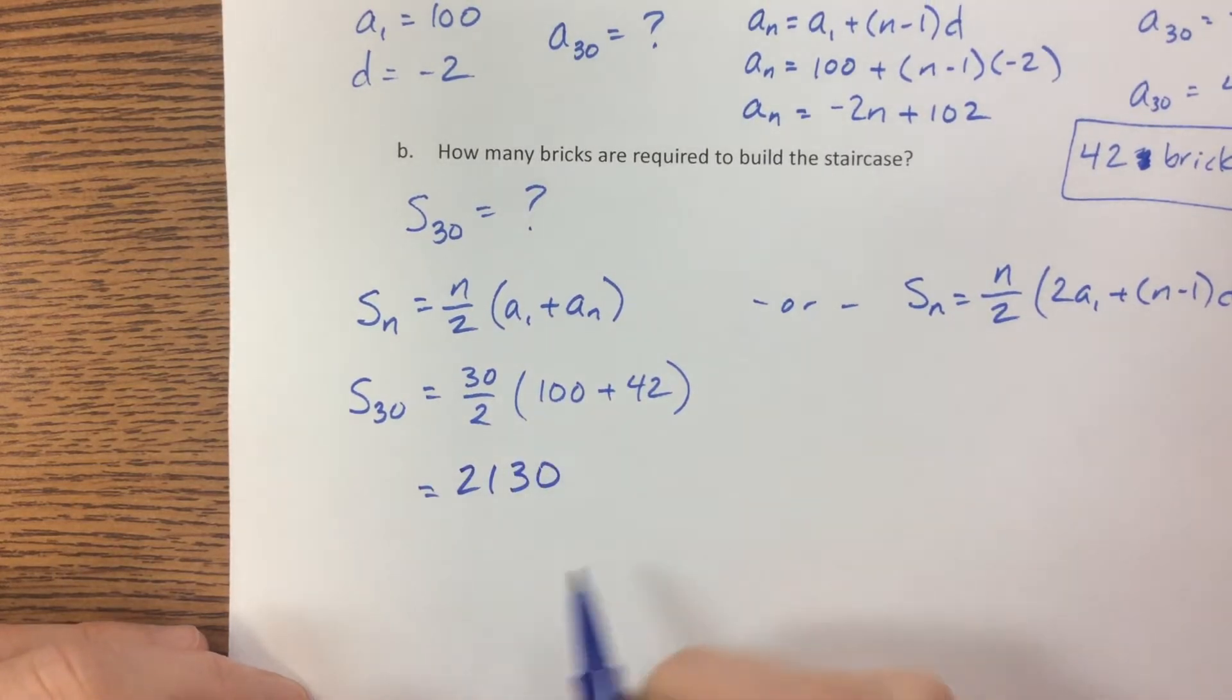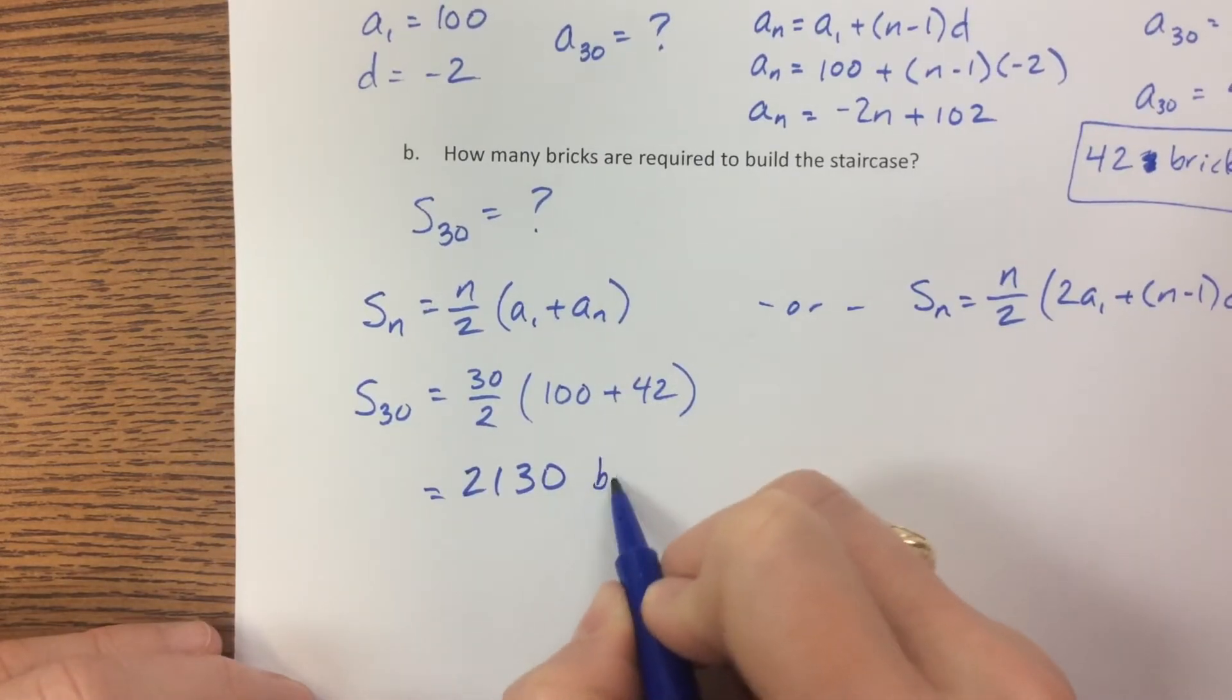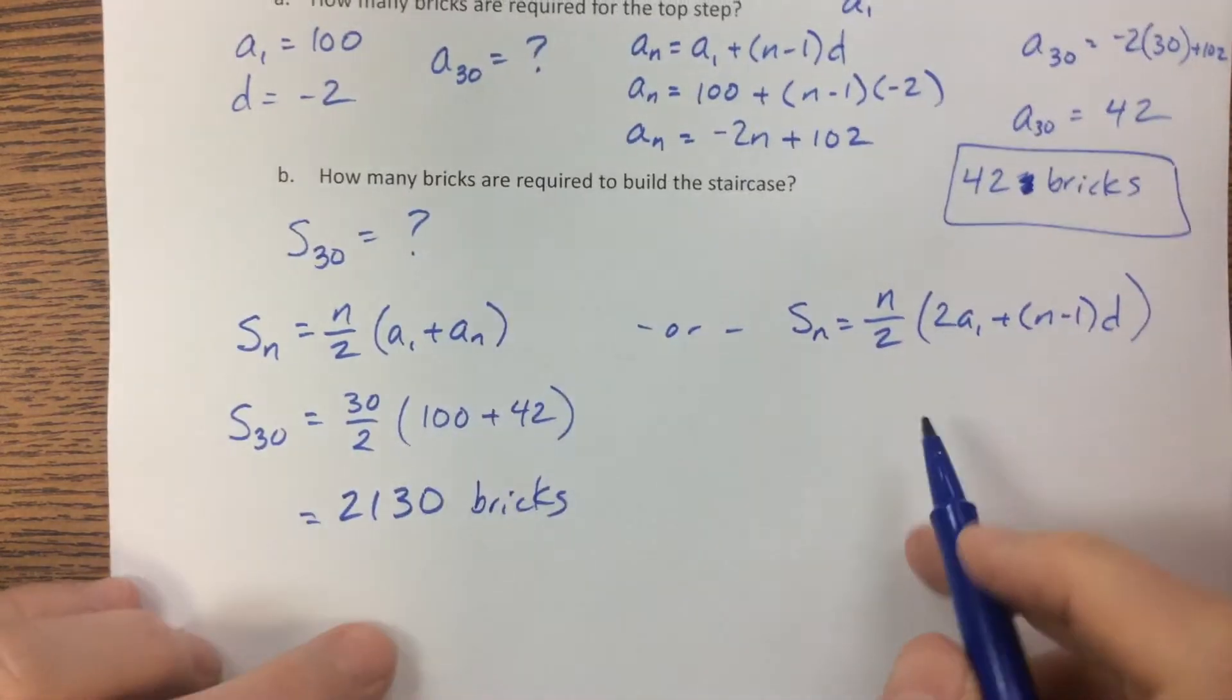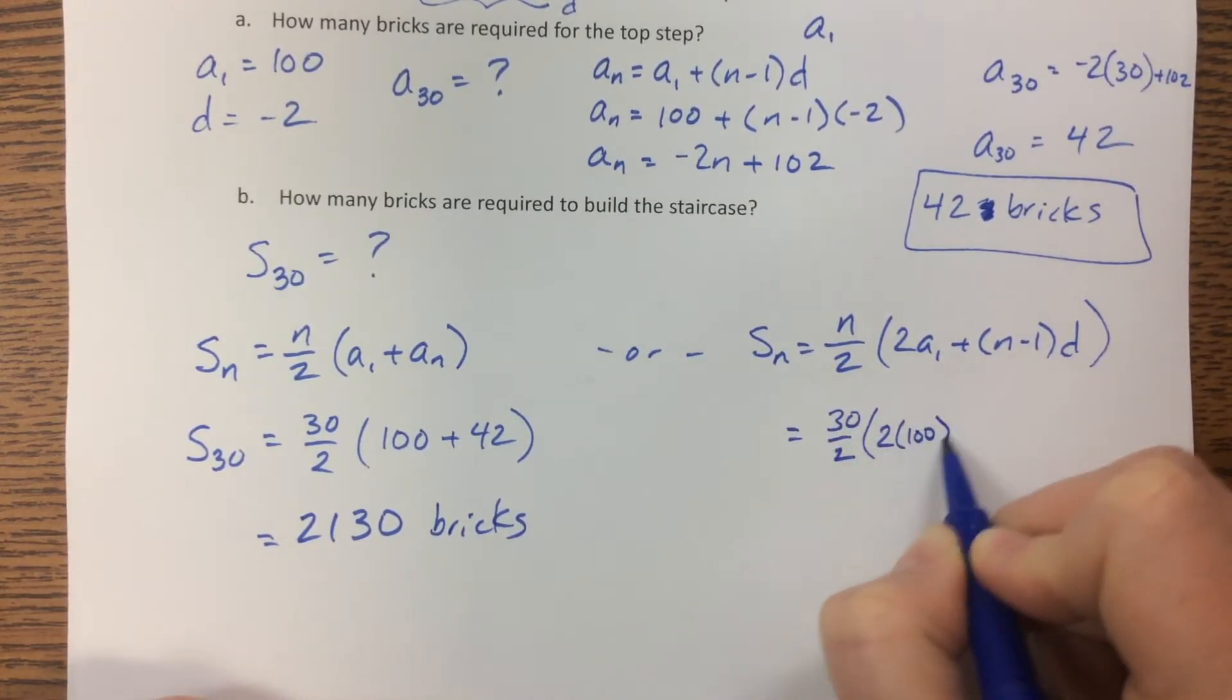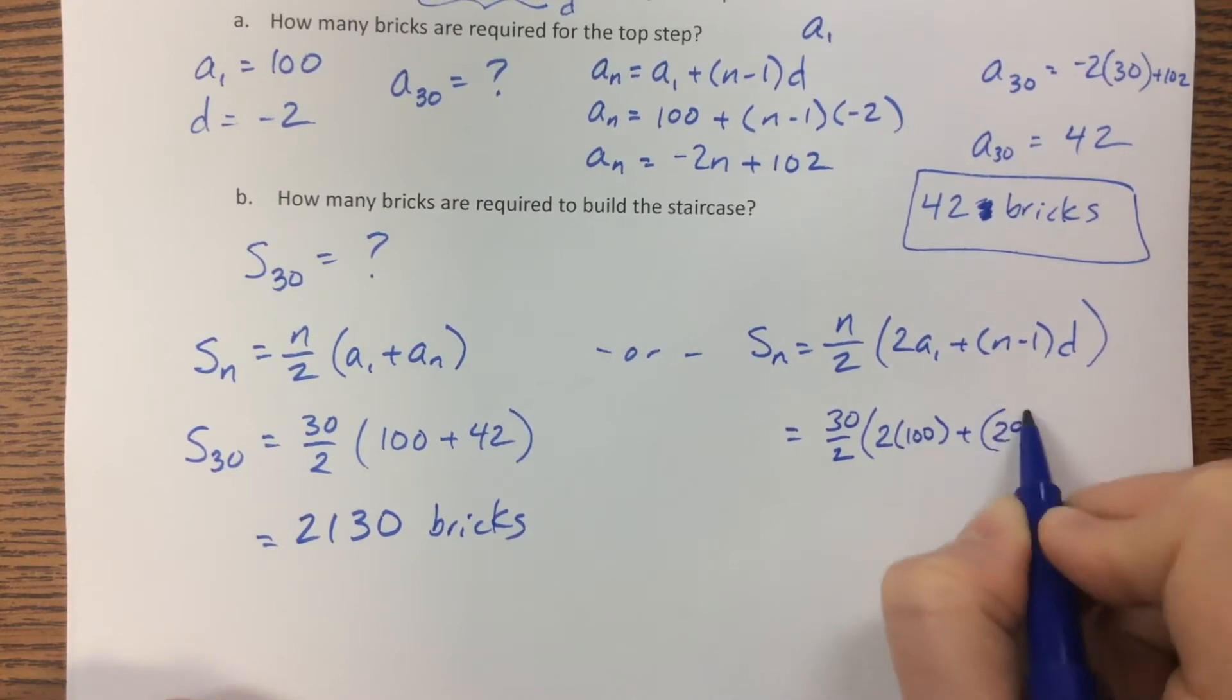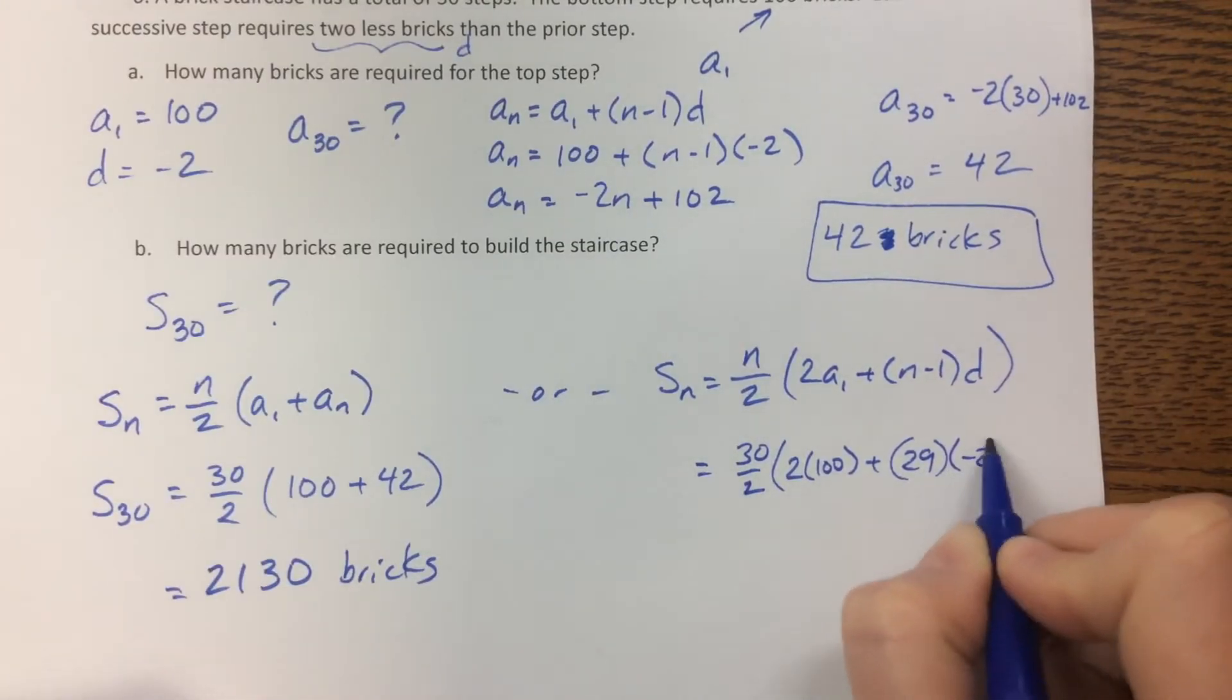And what are these? Are we talking steps? No, we're talking bricks. Plugging it in here, this should give us the same answer when it's all said and done. 30 minus 1, I was too lazy to write it out, times negative 2.